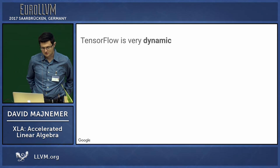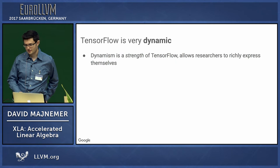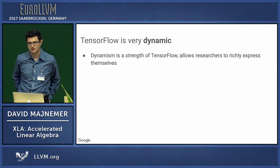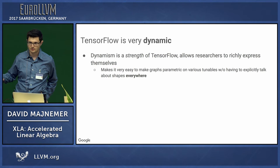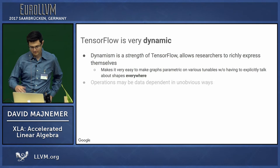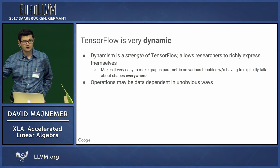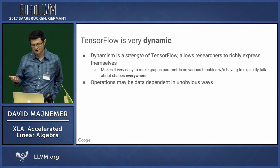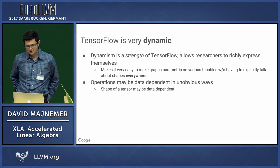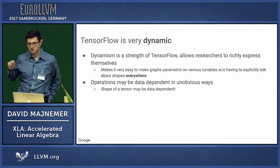TensorFlow is very dynamic, and this dynamism is important. TensorFlow is very popular among machine learning researchers who want to express themselves naturally. It makes sense to not force them to hard-code the shape of every single operation — it's better if TensorFlow can figure out what the shapes are. While operations may be data-dependent in obvious ways, the shape of a tensor might itself be data-dependent, meaning you might not know a tensor's shape until you evaluate some seemingly unrelated operation.